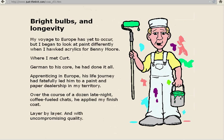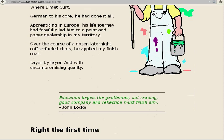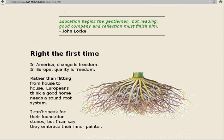Write the first time. In America, change is freedom. In Europe, quality is freedom. Rather than flitting from house to house, Europeans think a good home needs a sound root system. I can't speak for their foundation stones, but I can say they embrace their inner painter. A cultivated person's first duty is to be always prepared to rewrite the encyclopedia. Humberto Eco.